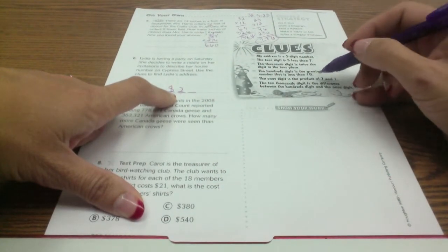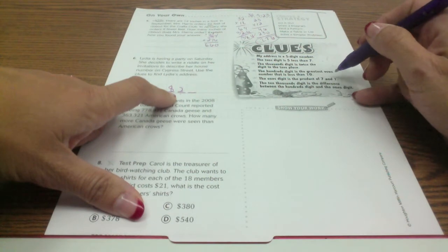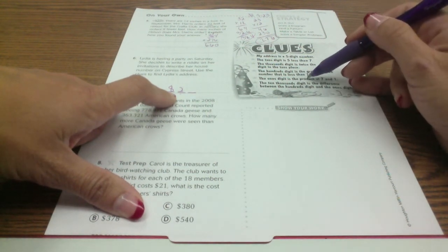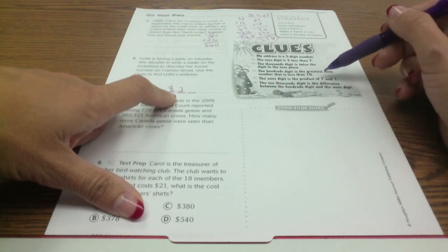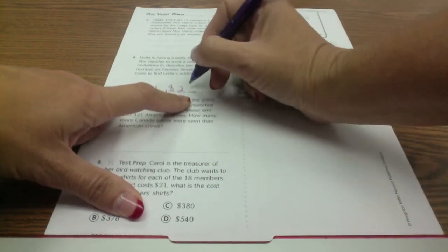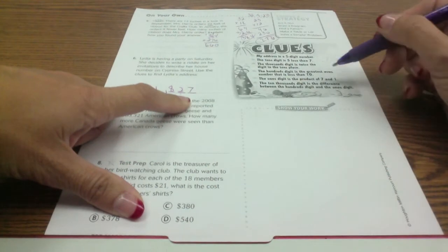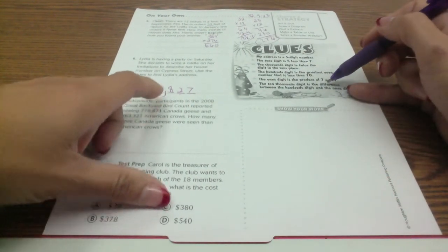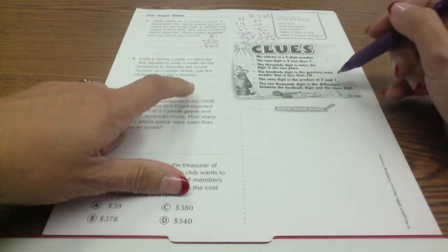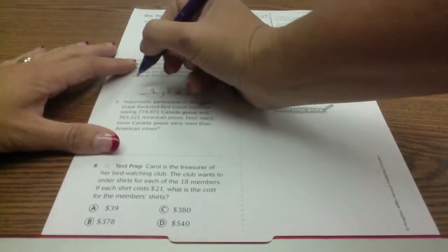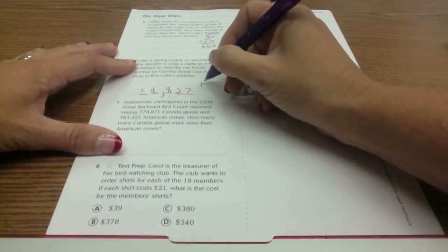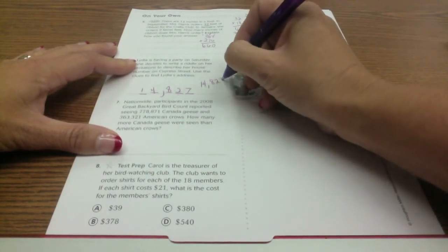The ones digit is the product of seven and one. A lot of you were doing the sum of seven and one, which would be 8, but the product means multiply. Seven times one, and that is 7. The ten thousands digit is the difference between the hundreds digit and the ones digit, which is 8 minus 7, which would be 1. So our number is 14,827.